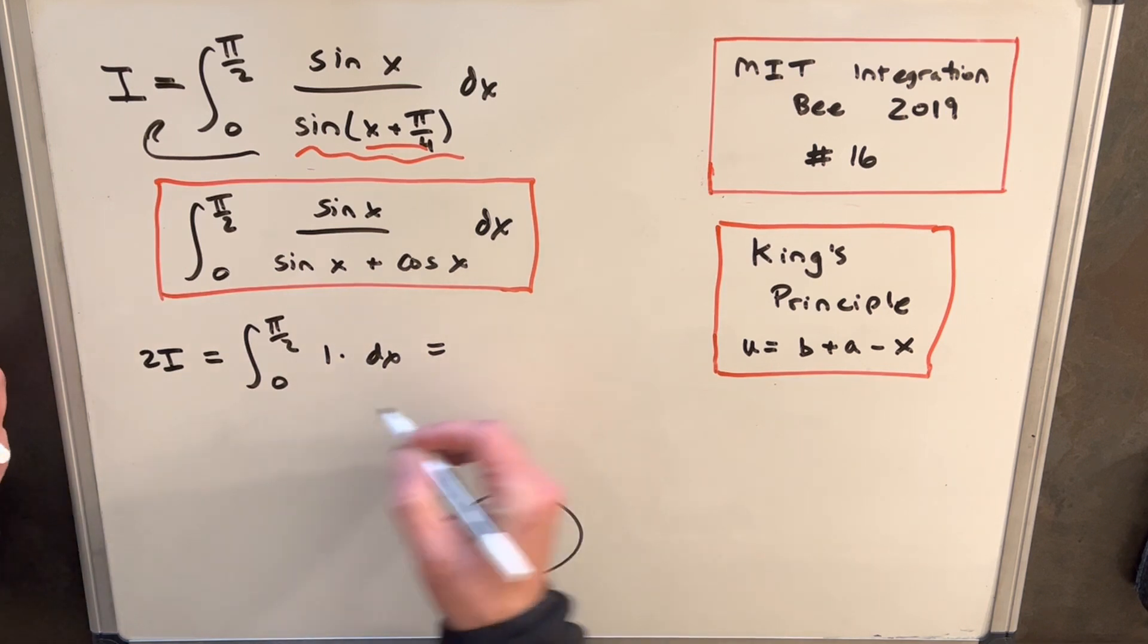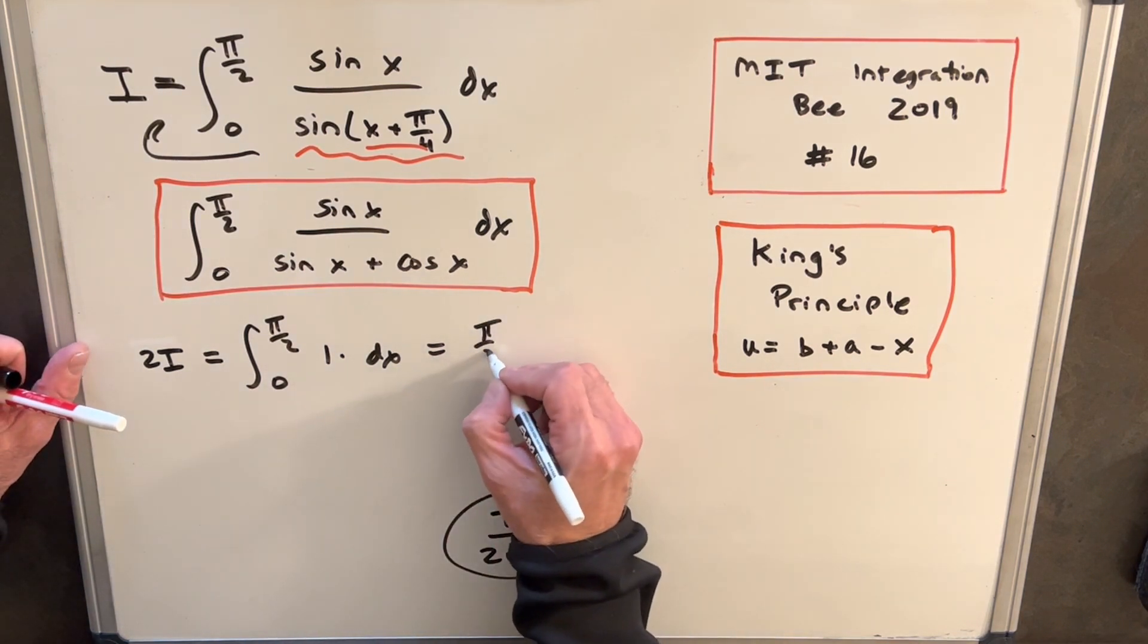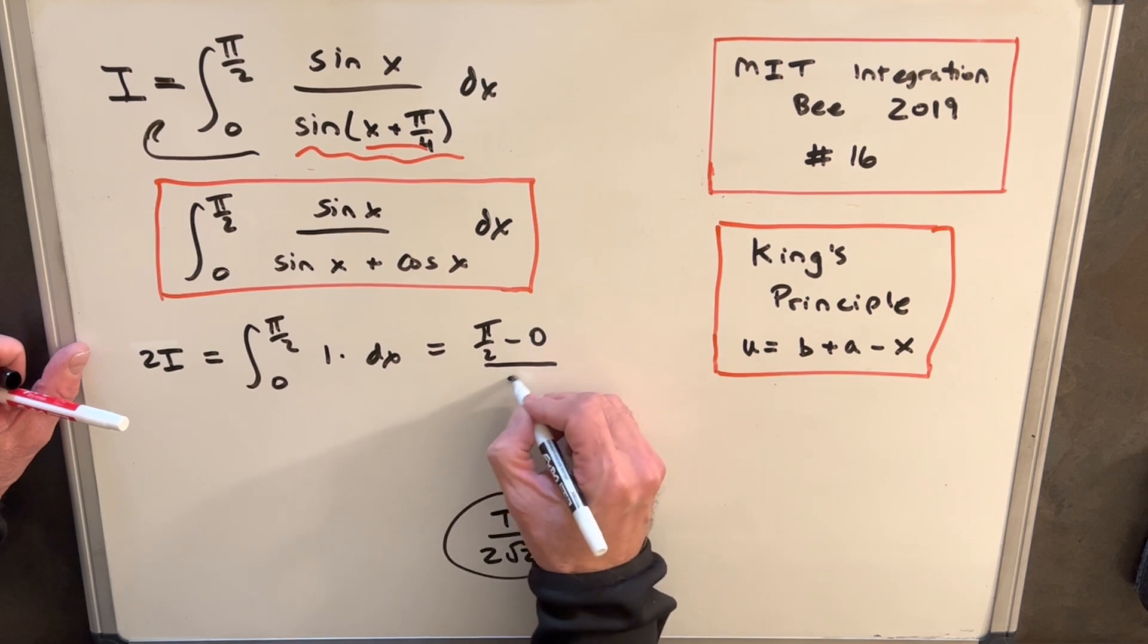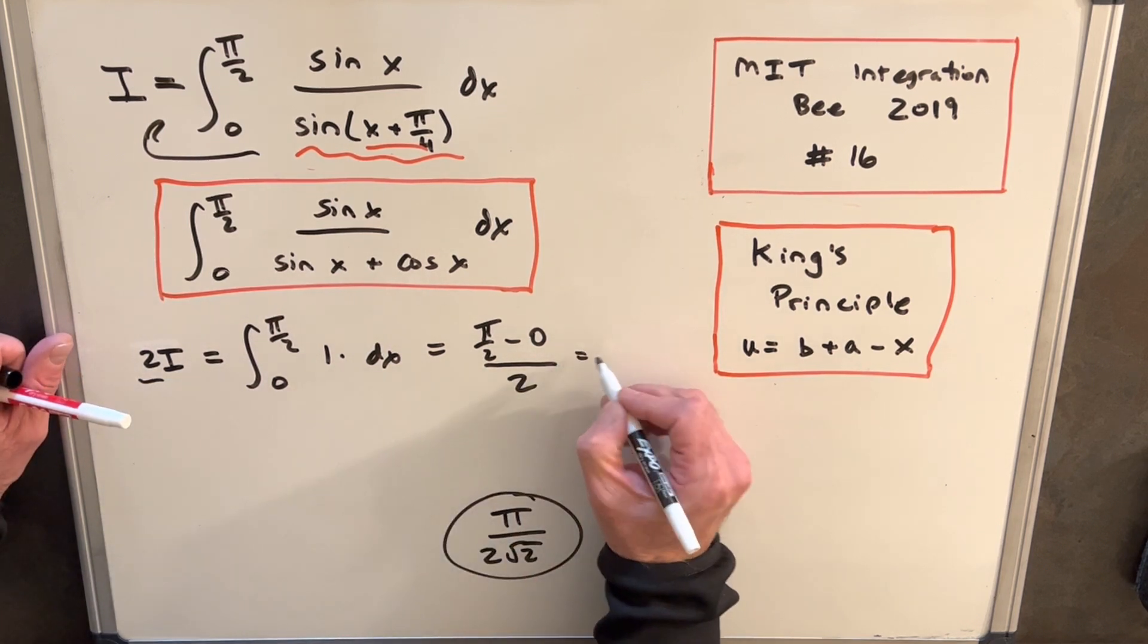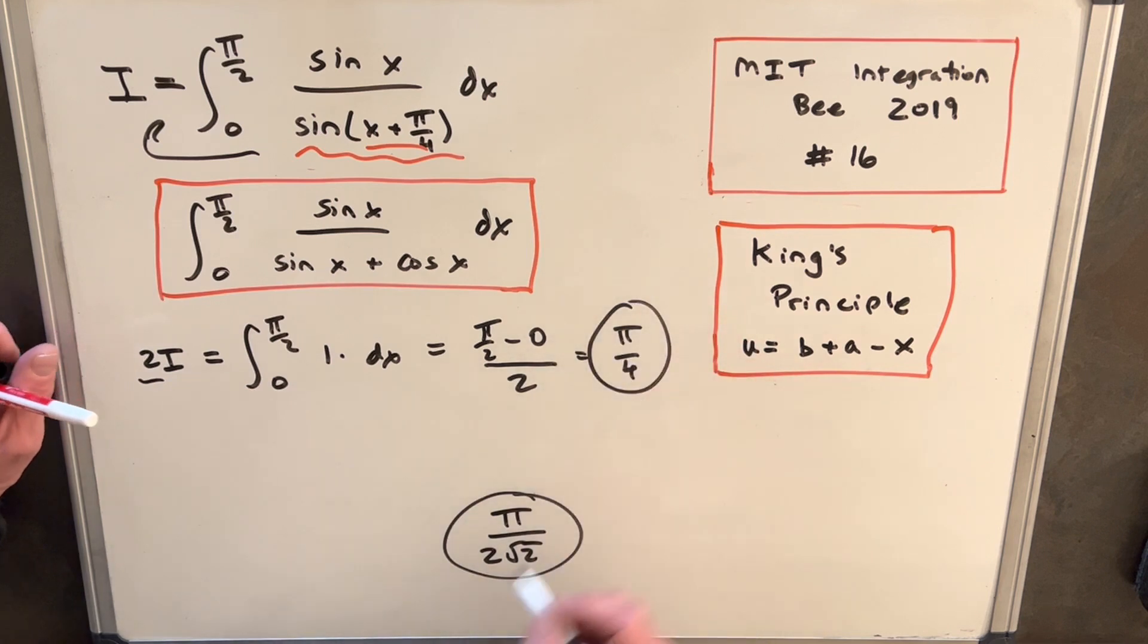You can just go, you know the integral of one is just x, and so this is going to be pi over 2 minus zero divided by 2, as we have our 2 there. And so this thing is going to always be pi over 4.